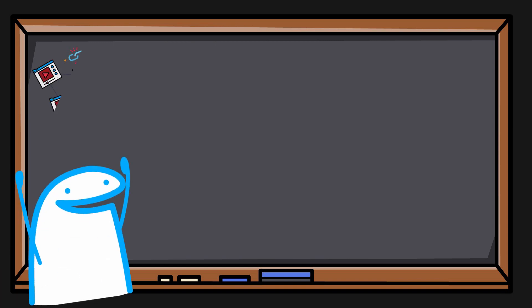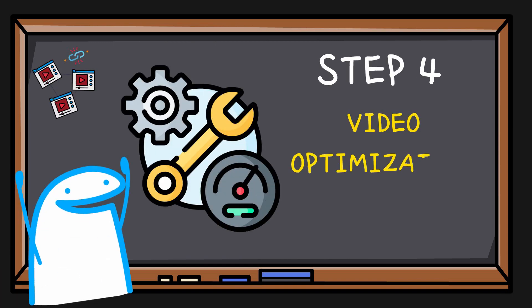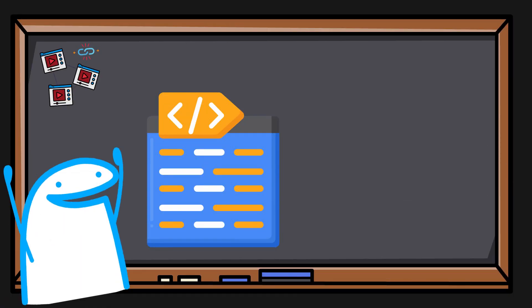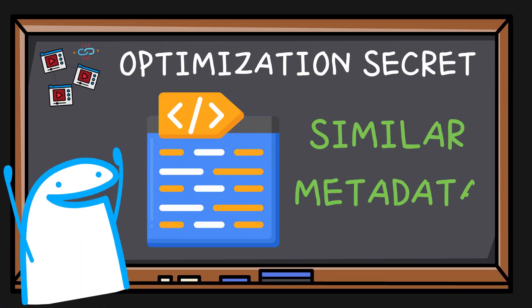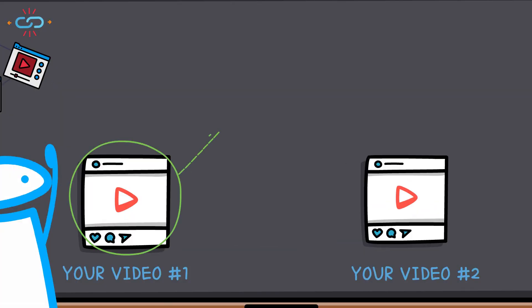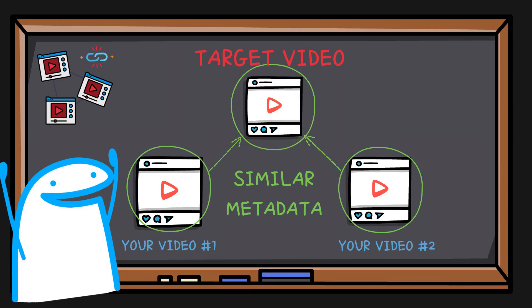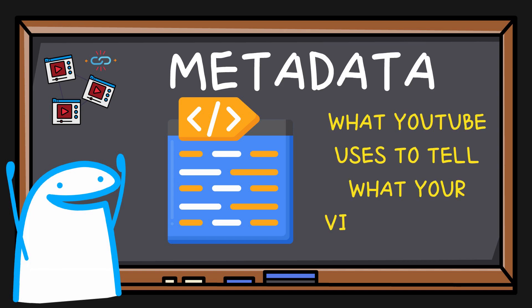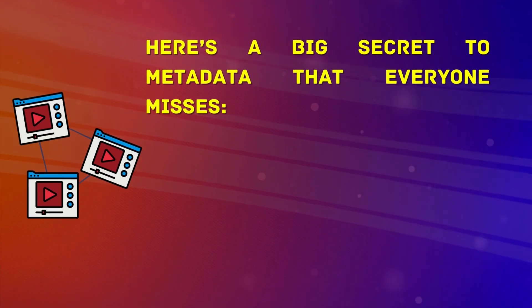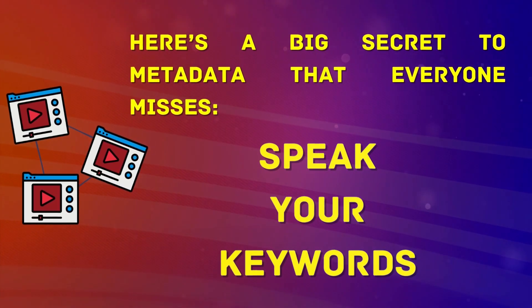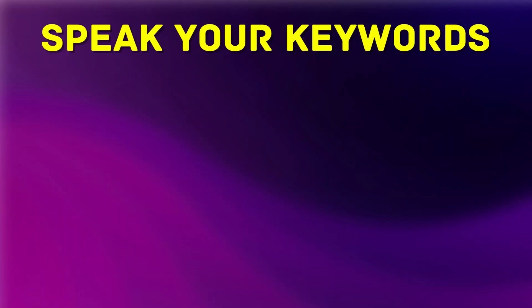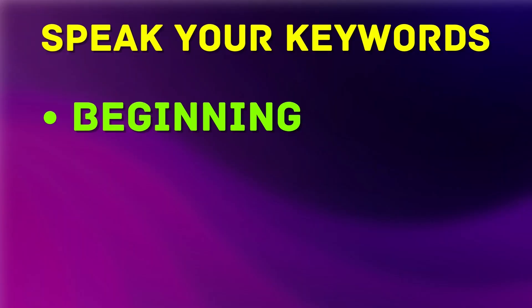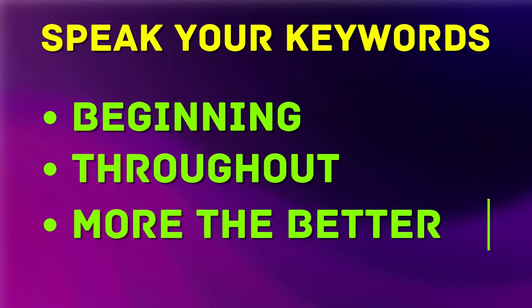But this does not work unless you include Step 4: video optimization secrets. The optimization secret is similar metadata. Make sure both your videos have metadata similar to the popular video you're targeting. Metadata is what YouTube uses to tell what your video is about. Here's a big secret to metadata that everyone misses: speak your keywords. You want to speak your keywords at the very beginning of your video and also throughout — the more keywords you can sprinkle in through speech, the better. Just keep it natural so you don't spam-speak keywords through your whole video.